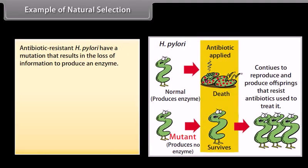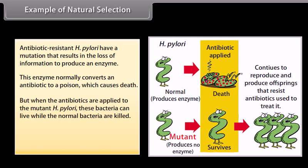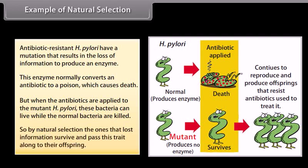An example of natural selection: antibiotic-resistant H. Pylori have a mutation that results in the loss of information to produce an enzyme. This enzyme normally converts an antibiotic to a poison which causes death. But when antibiotics are applied to the mutant H. Pylori, these bacteria can live while the normal bacteria are killed. So by natural selection, the one that lost the information survives and passes this trait along to their offspring.